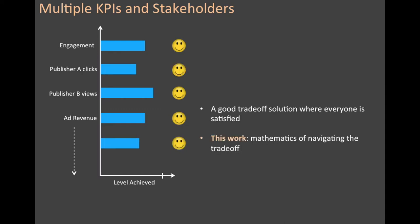A far more satisfactory outcome might be something like this, where maybe the engagement is a bit lower than the ideal achievable, but now publisher A is getting enough clicks to be happy as well. A good trade-off solution is thus reached and everyone is satisfied. This work is about the mathematics of navigating this type of trade-off.